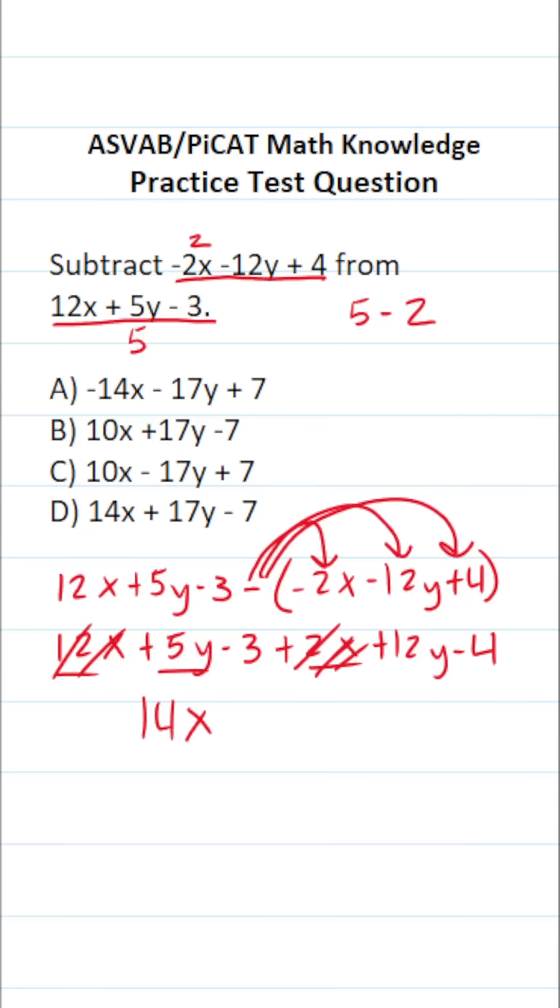Then we have 5y and 12y. 5y plus 12y is going to be 17y. And to make it easy to read, let's cross them out.